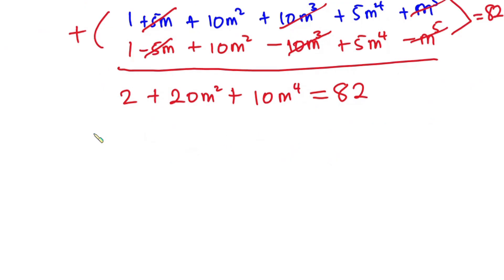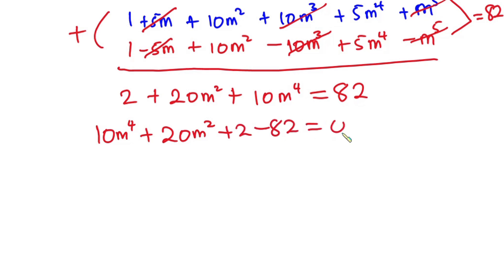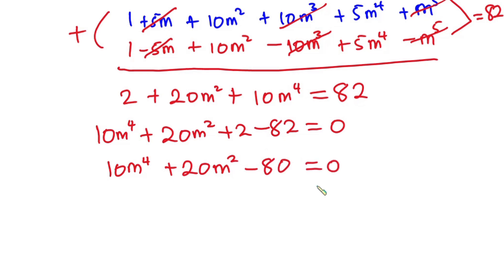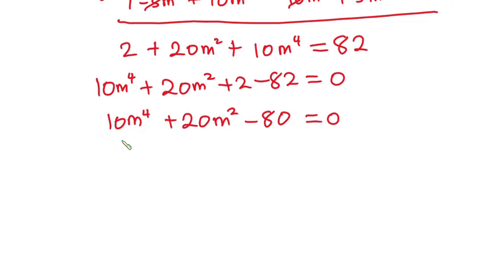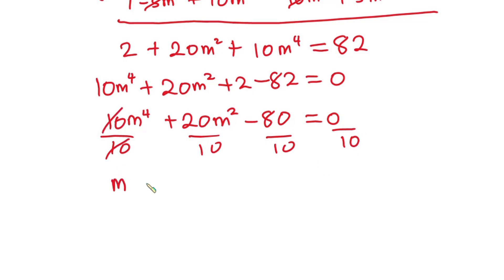Rearranging to zero: 10m⁴ + 20m² + 2 − 82 = 0, which gives 10m⁴ + 20m² − 80 = 0. Dividing through by 10 we get: m⁴ + 2m² − 8 = 0.